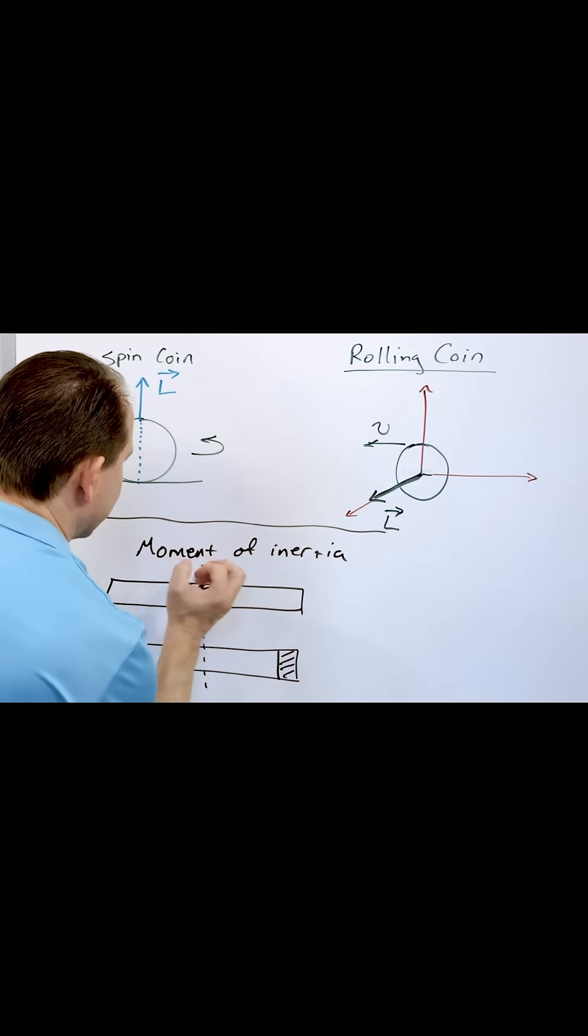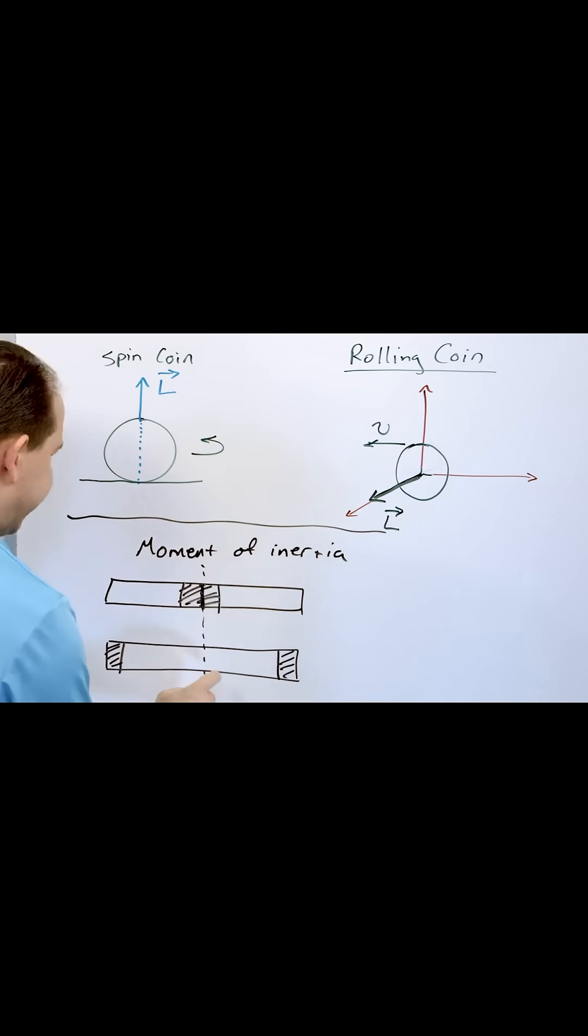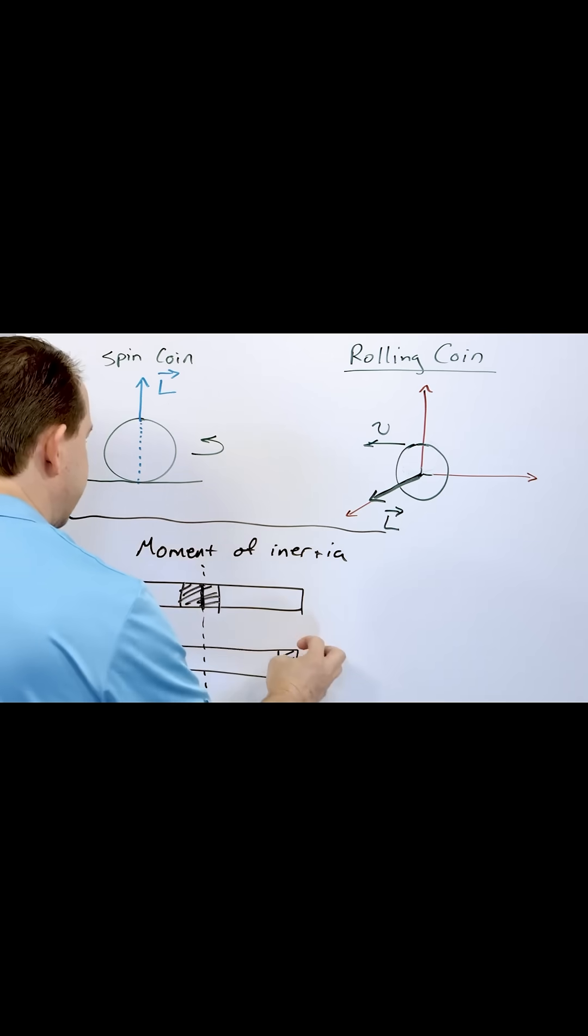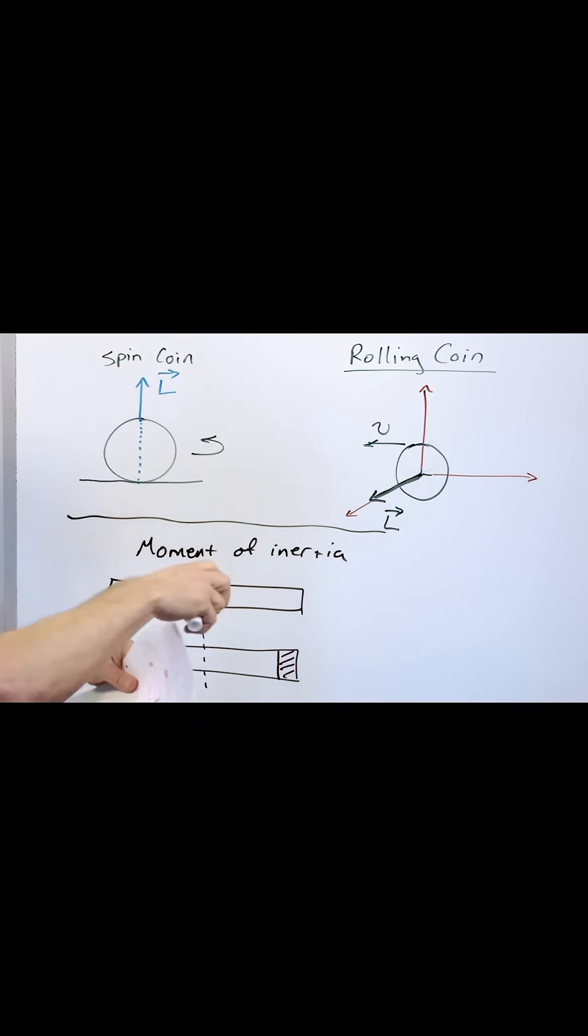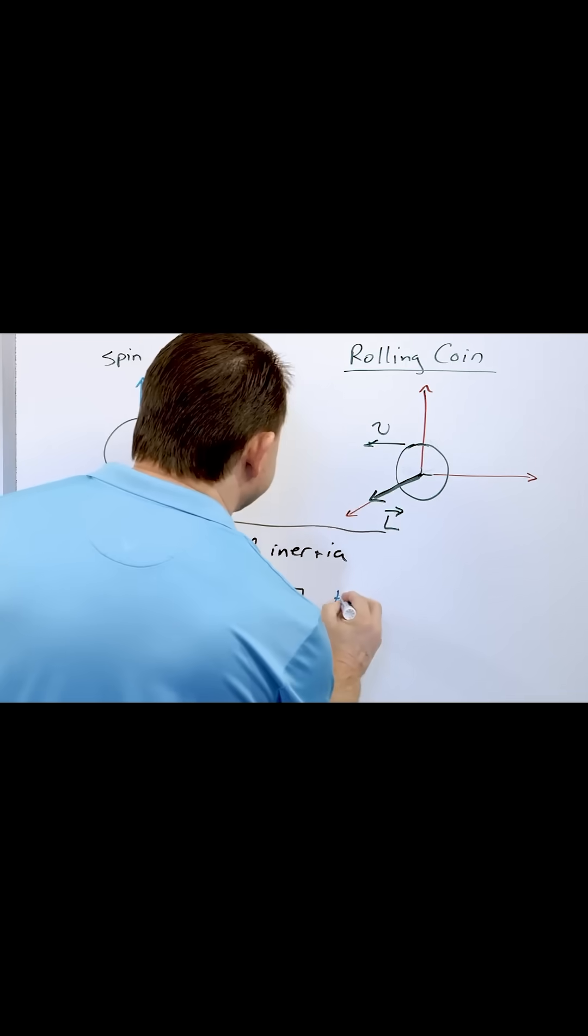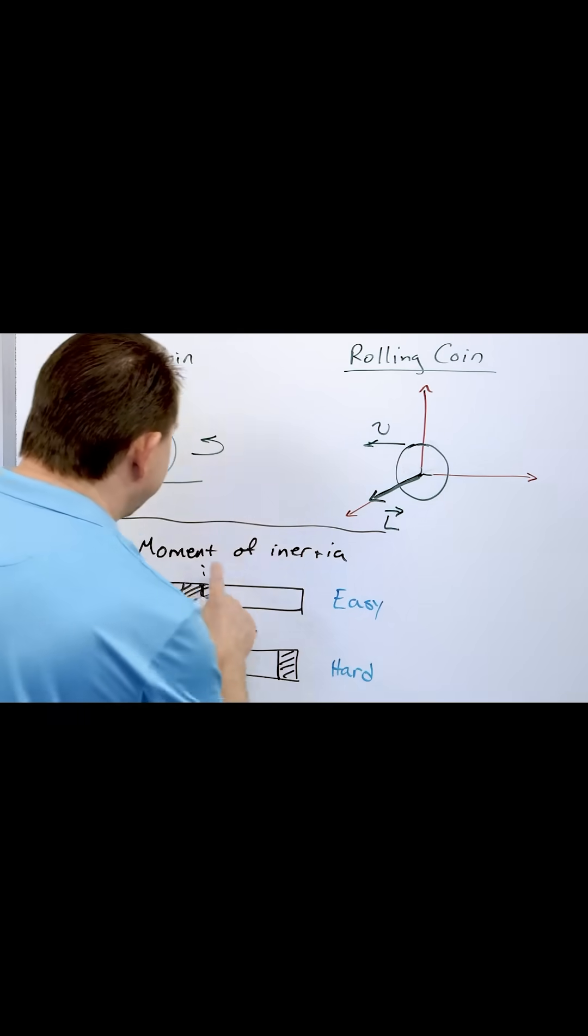This one is gonna be very easy to rotate. I think you can visualize that. This one with a really heavy mass toward the end is gonna be much, much harder to rotate. So this one is gonna be easy, and this is gonna be hard to rotate about this axis.